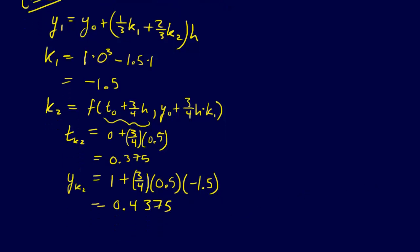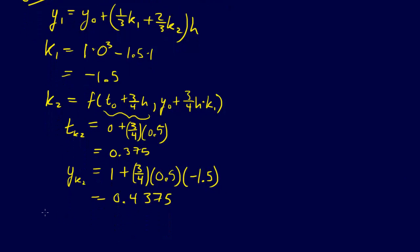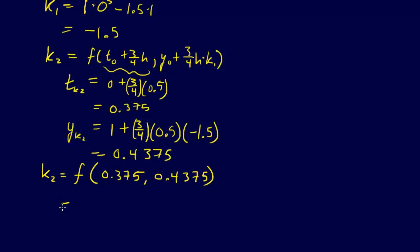All right, so that means that our K_2, our K_2 equals just, it's F of, now we finally figured out what it's F of, F of 0.375, 0.4375. So now, we can just plug those values in to our original, so that's going to be 0.4375, 0.375 times 0.375, minus 1.5 times 0.4375.